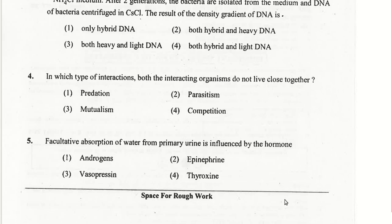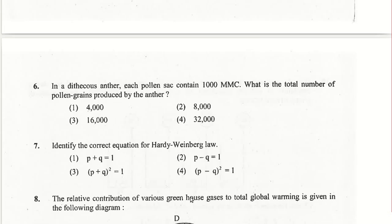Facultative absorption of water from primary urine is influenced by the hormone vasopressin, also called anti-diuretic hormone (ADH). Deficiency of ADH causes diabetes insipidus. The answer is the third option — vasopressin or ADH.